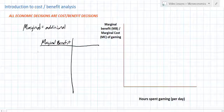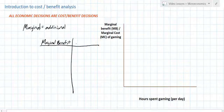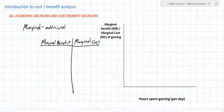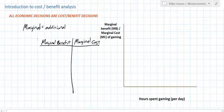We'll find that the marginal benefit of the second hour of playing games is less than the marginal benefit from the first hour of playing games. Every economic decision considers not just the additional benefit of doing something, but also the additional cost. So we're also going to be looking at the marginal cost of each additional hour of gaming.